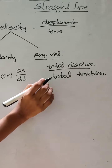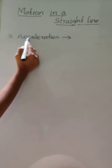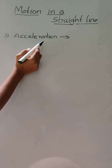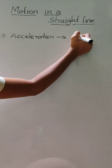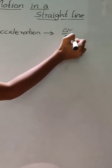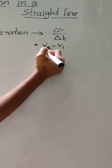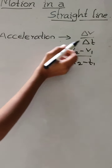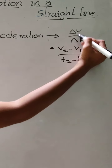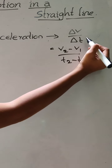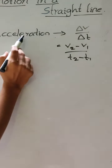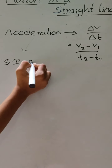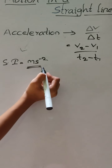Next is acceleration. Acceleration is defined as the rate of change of velocity, which we can write as delta v by delta t, or v2 minus v1 by t2 minus t1. This is also known as change in velocity by change in time. Its SI unit is meter per second squared.